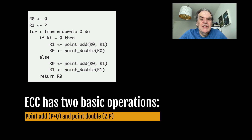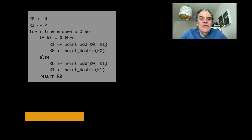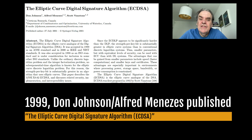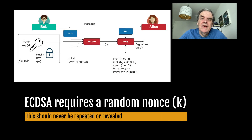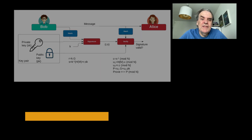These can be combined to provide a scalar operation of a × G. In 1999, Don Johnson and Alfred Menezes published a classic paper on the Elliptic Curve Digital Signature Algorithm, ECDSA. It was based on the DSA digital signature algorithm method, which was created by David W. Kravitz in a patent assigned to the US. ECDSA is a digital signature method and requires a random nonce value k, which should never be reused or repeated. ECDSA is the elliptic curve equivalent version of the DSA signature method.